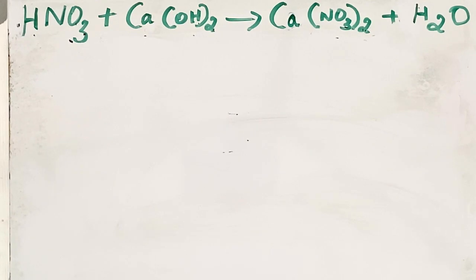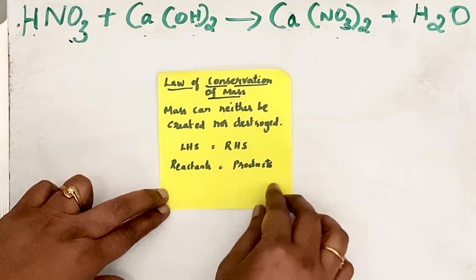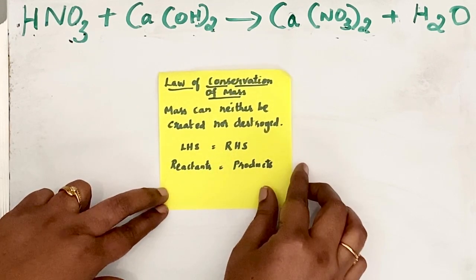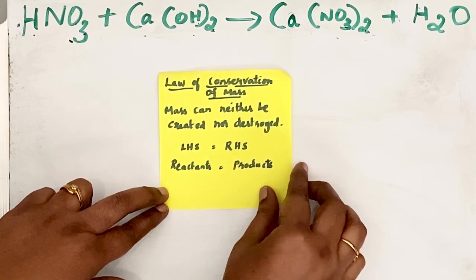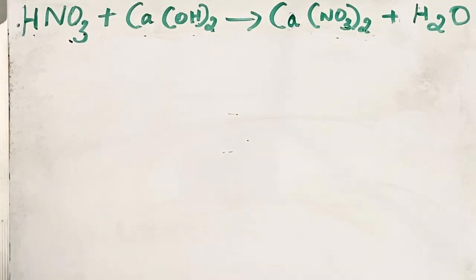While balancing any chemical equation we should remember the law of conservation of mass. According to this law, mass can neither be created nor destroyed. That means the number of atoms on the reactants side is equal to the number of atoms on the products side. So let us start balancing the equation.